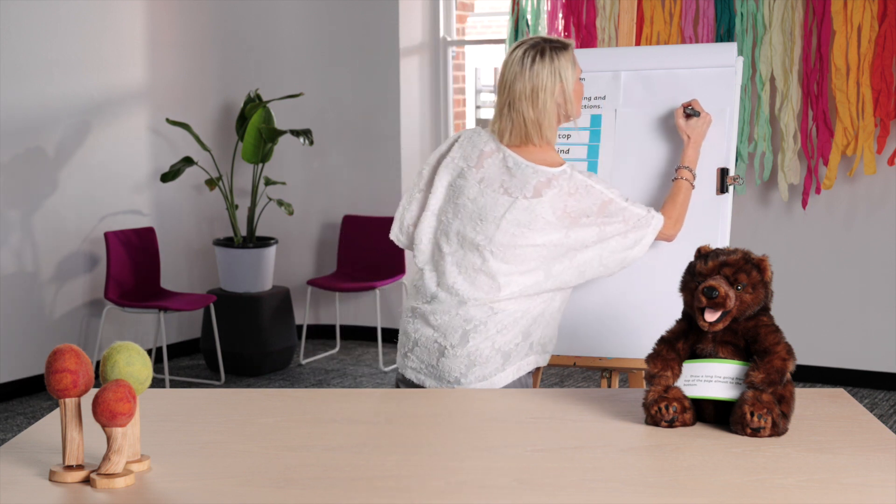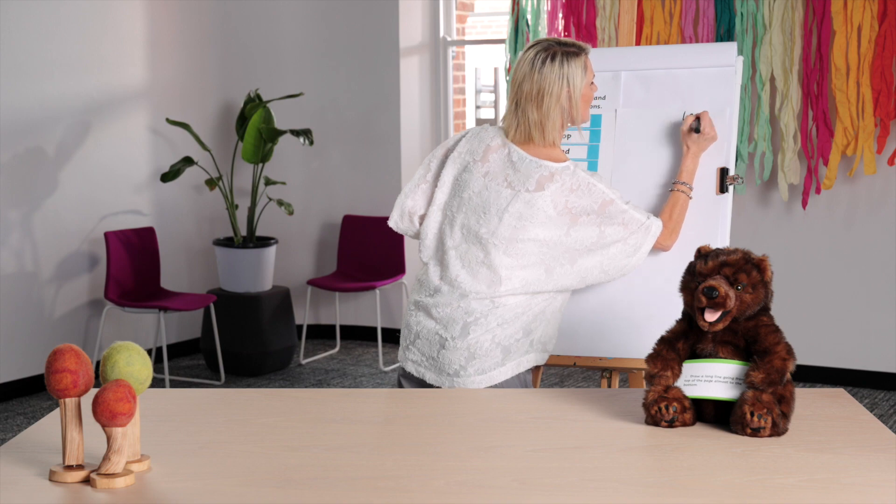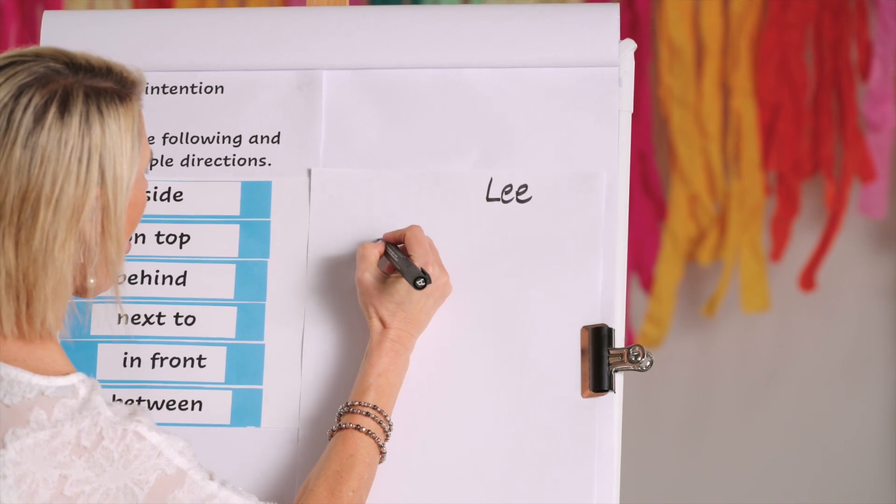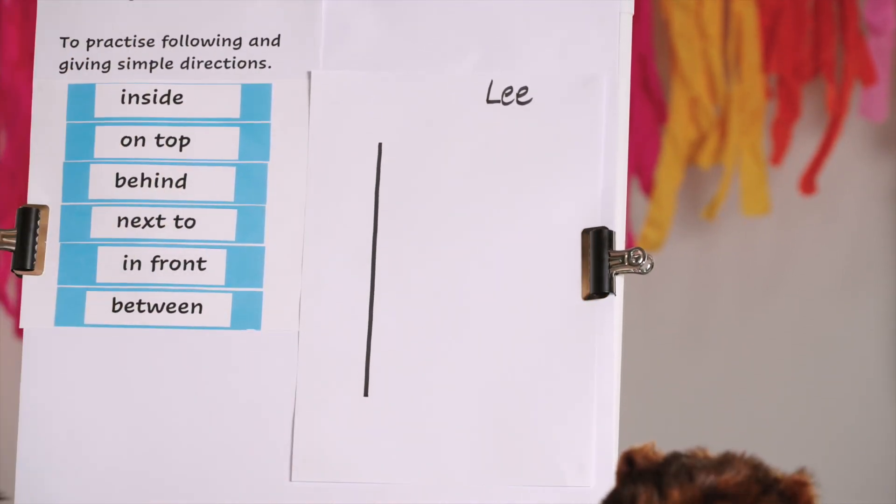Are you ready, Baby Bear? Baby Bear has the instructions in his lap. I've got my marker here. I'm going to write my name at the top — Lee, that's my name. Are you ready to give me an instruction? I'm ready to follow. First instruction, number one: draw a long line going from the top of the page almost to the bottom.